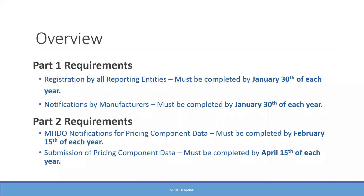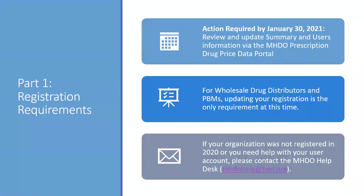These deadlines are slightly different from last year's initial year — these will be the new deadlines for 2021 and all years to come. Action is required by January 30th, 2021. All entities must log in and review and update the summary and user information in the MHDO prescription drug price data portal. Wholesale drug distributors and PBMs: updating your registration is the only requirement due by January 30th. If your organization was not registered in 2020 or you need help with your user account, the MHDO help desk is available to get your accounts reset or get you pre-registered.